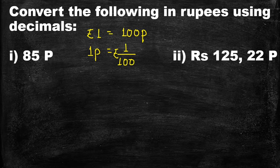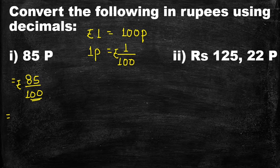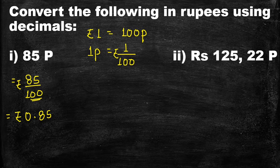Here 85 paise are given. So 85 paise will be equal to 85 upon 100 rupees, as 1 paise equals 1 upon 100 rupee. You can see there are two zeros in the denominator after 1, so we will place the decimal point two places from the left side of 8. It will be equal to rupees 0.85 — two digits are there after decimal, as there were two zeros in the denominator.